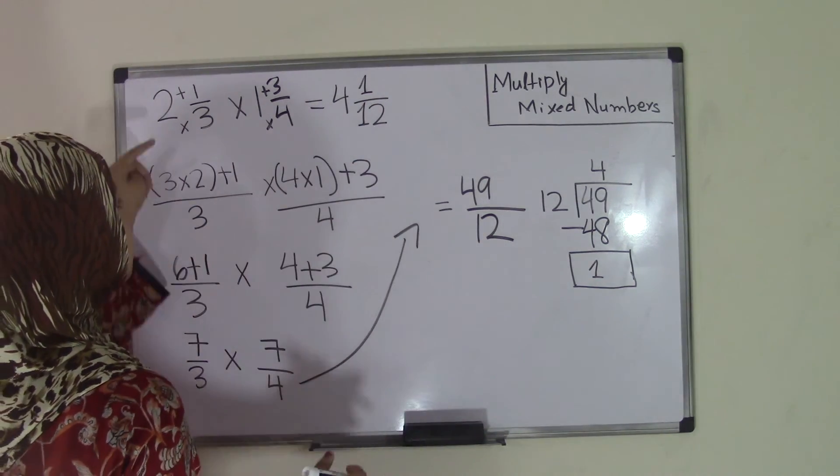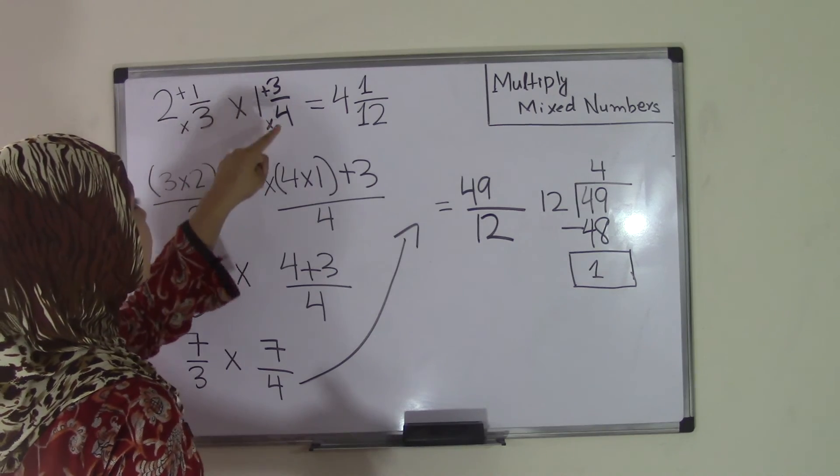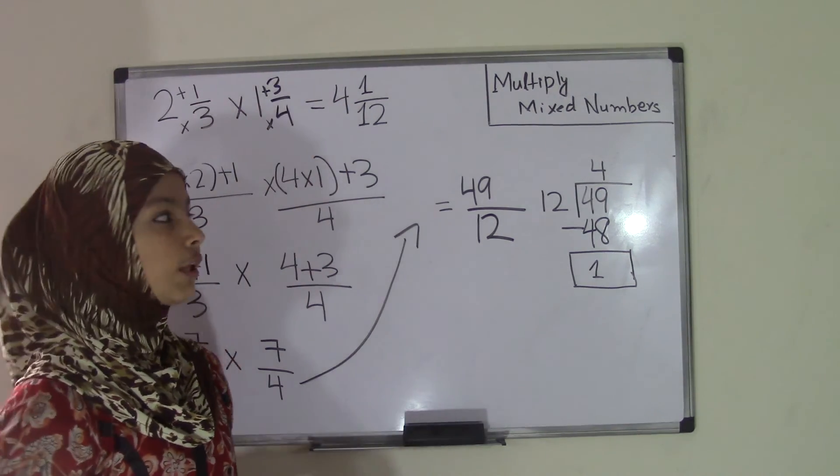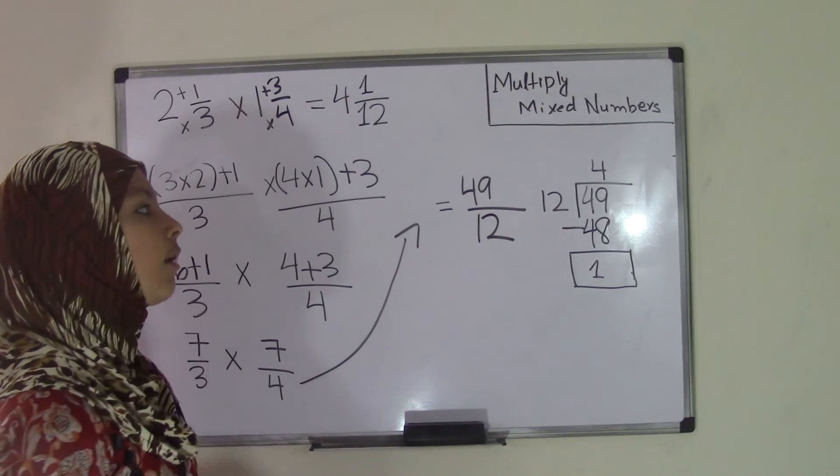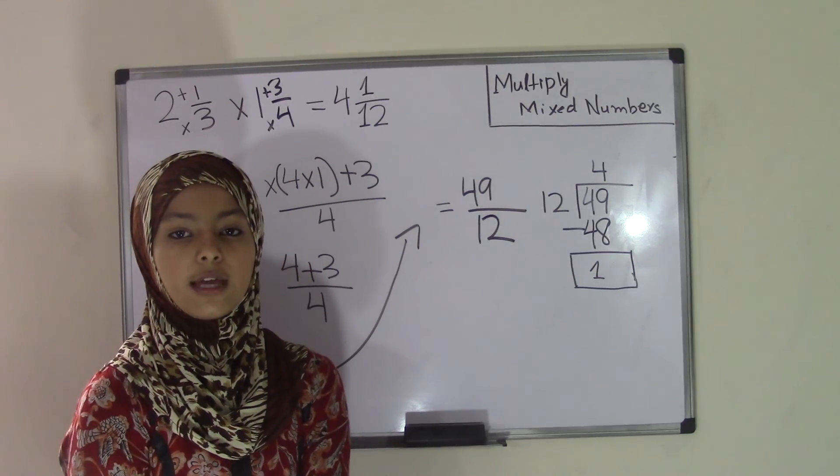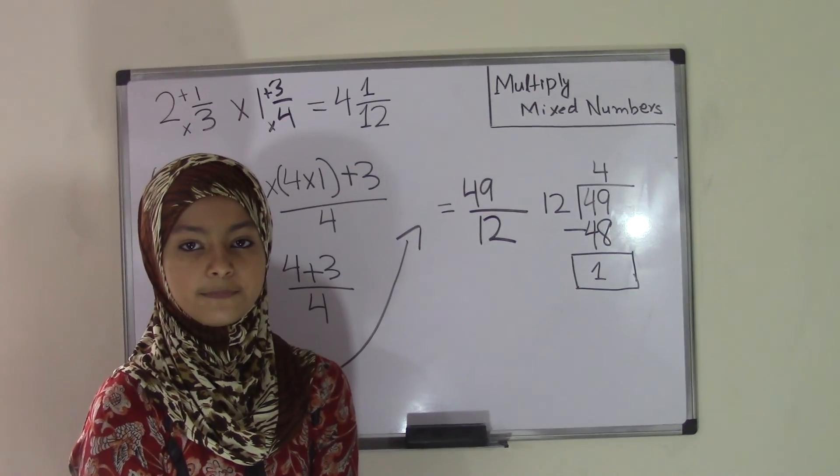So that means, to top it all off, 2 and 1/3 times 1 and 3/4 equals 4 and 1/12. So that was really easy, and I hope you guys understood this. Now, once again, you can visit our website to find more practice problems, and stick around for more videos, and we'll see you guys next time. Thank you.